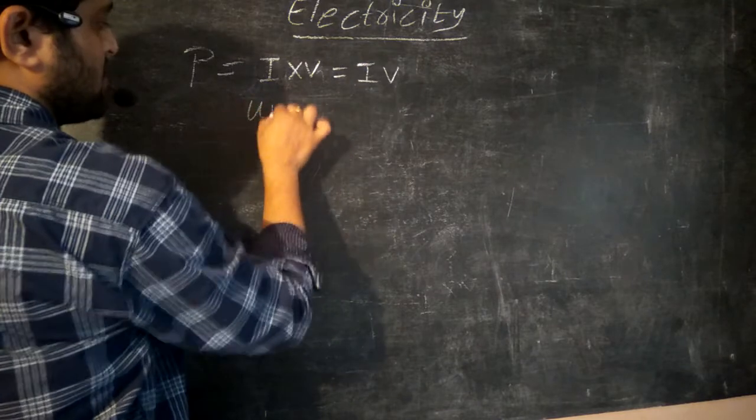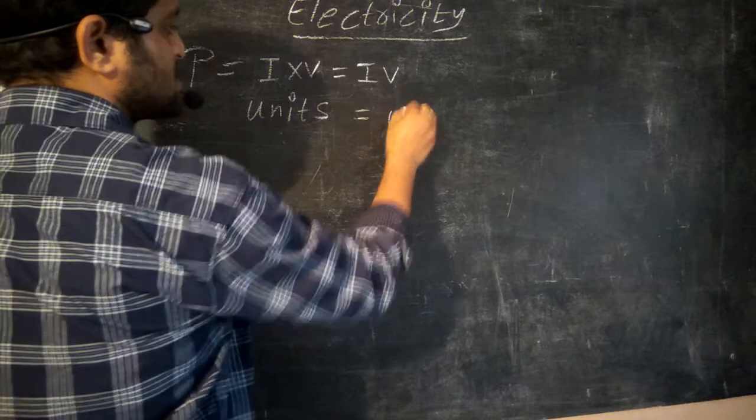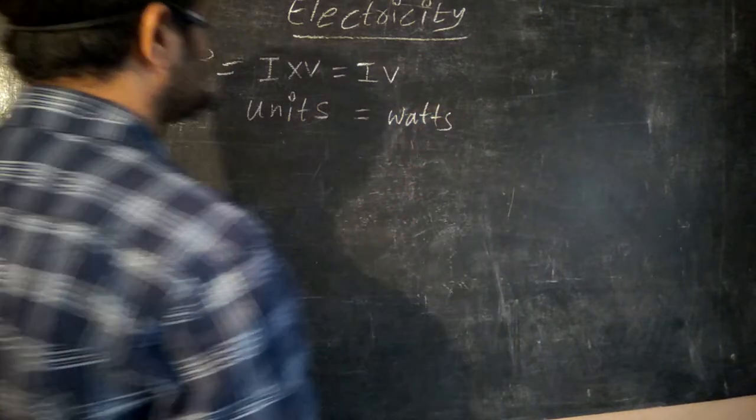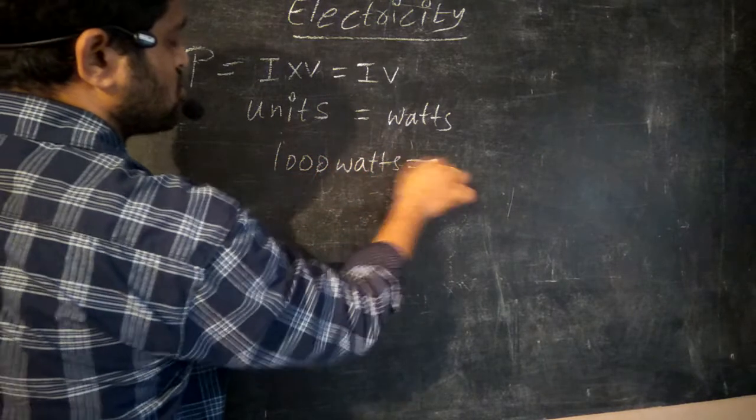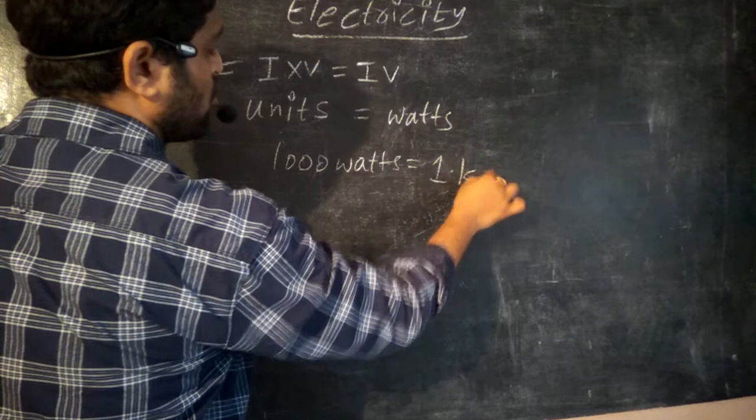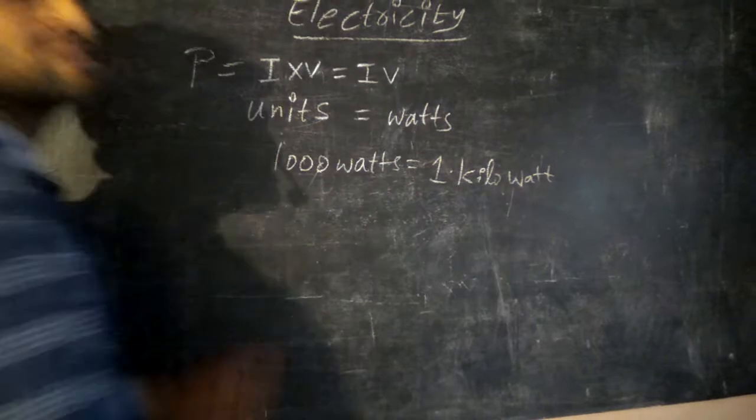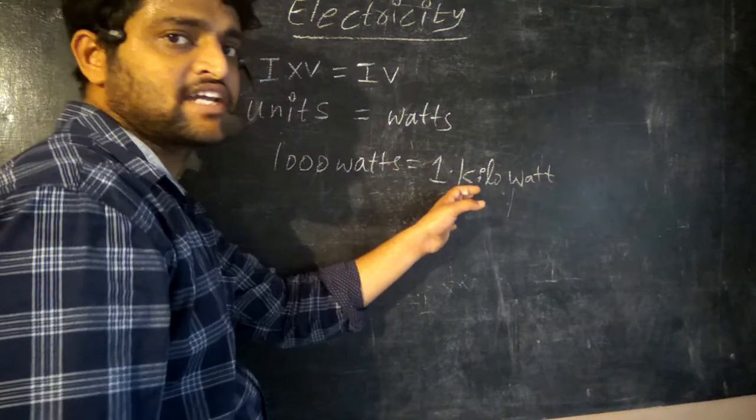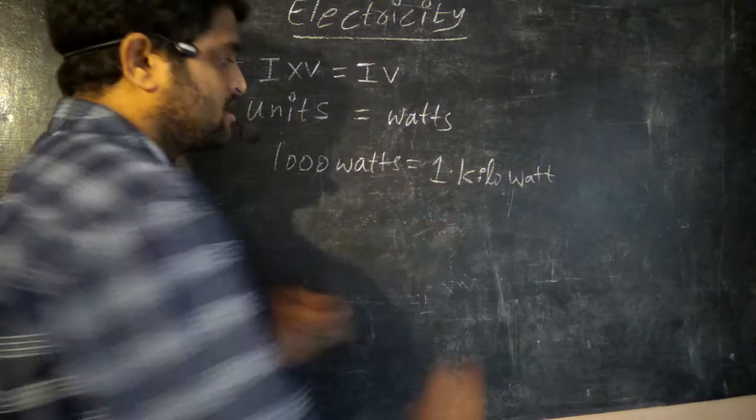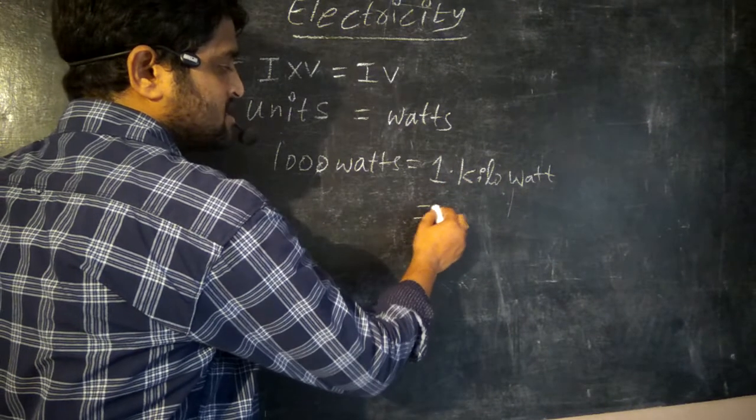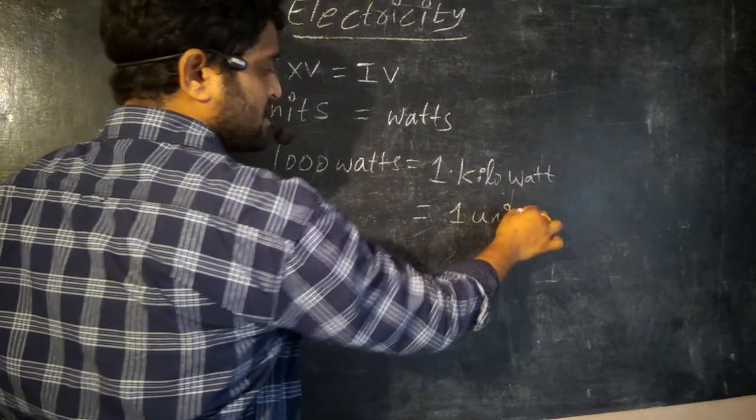So we got power is equal to I into V or IV. The units for power is watts. Thousand watts is equal to one kilowatt.